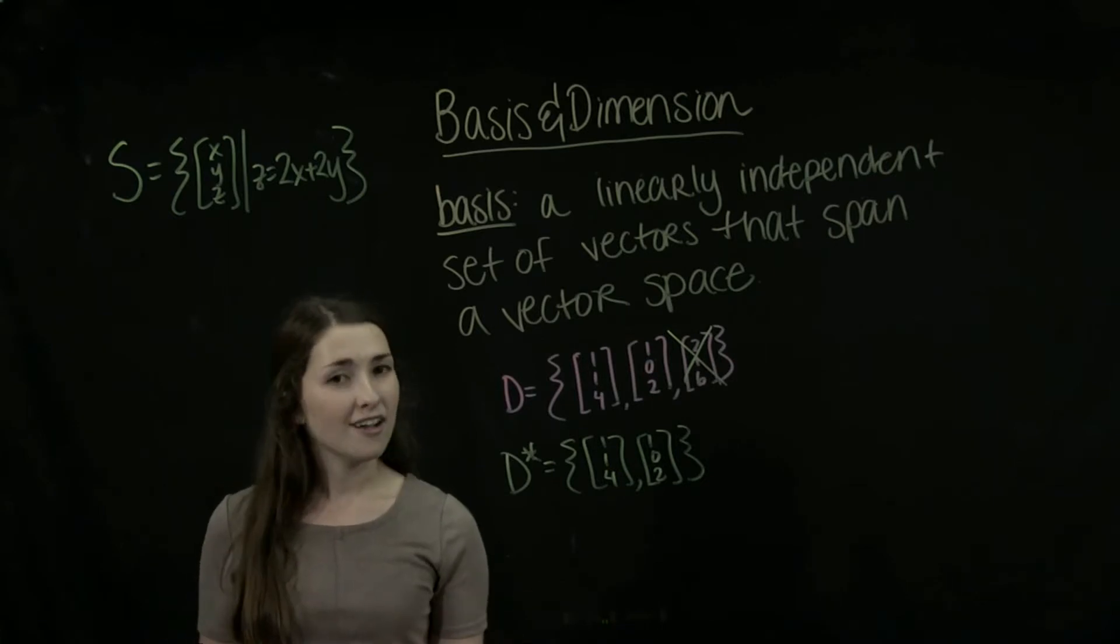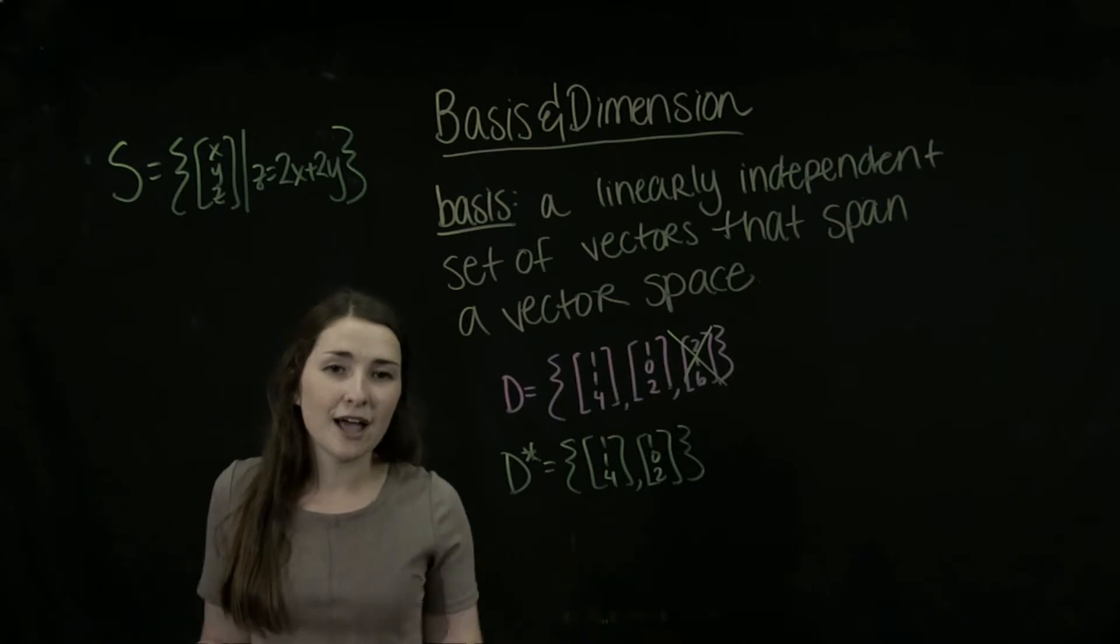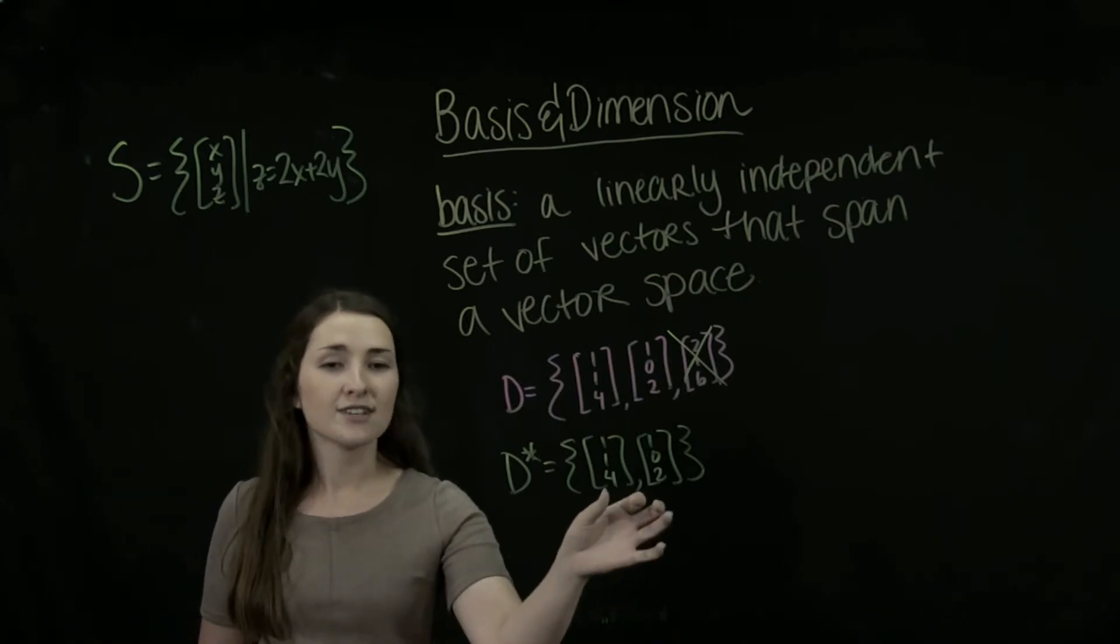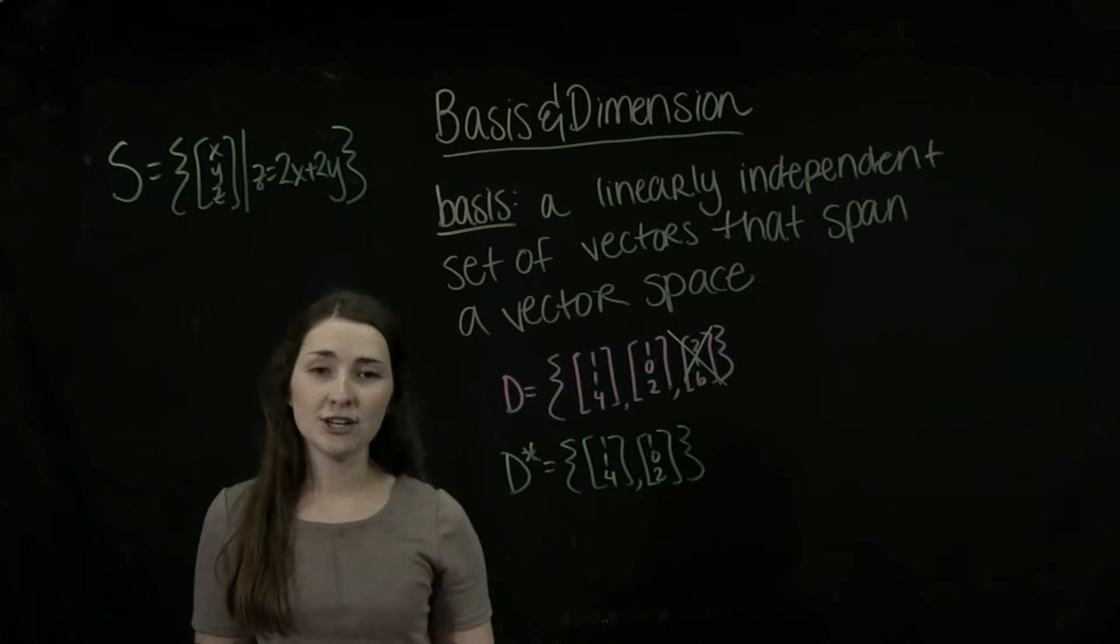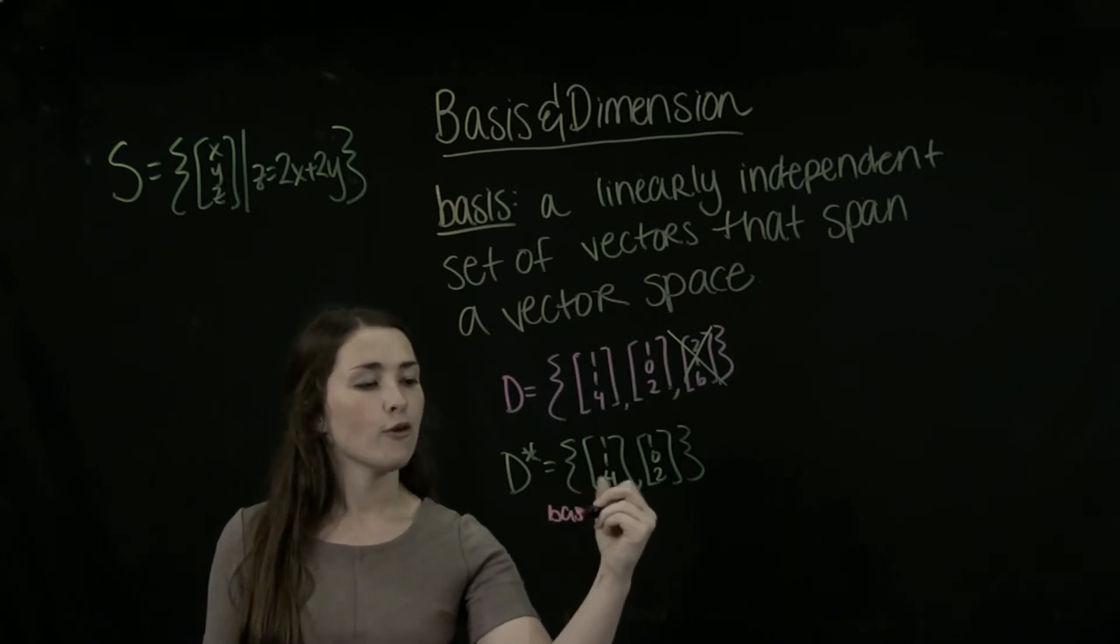And we also know that these two vectors are linearly independent because they're not multiples of each other. So there's no way that we can write 1, 1, 4 as a linear combination of 1, 0, 2, or vice versa. So D forms a basis for us.